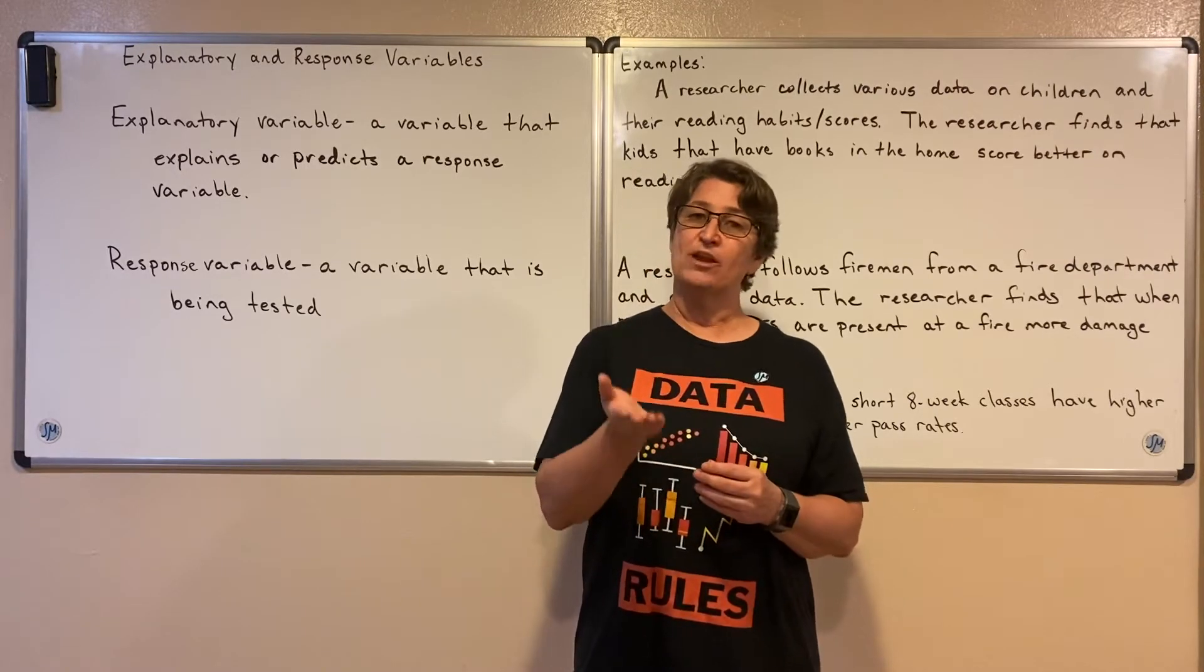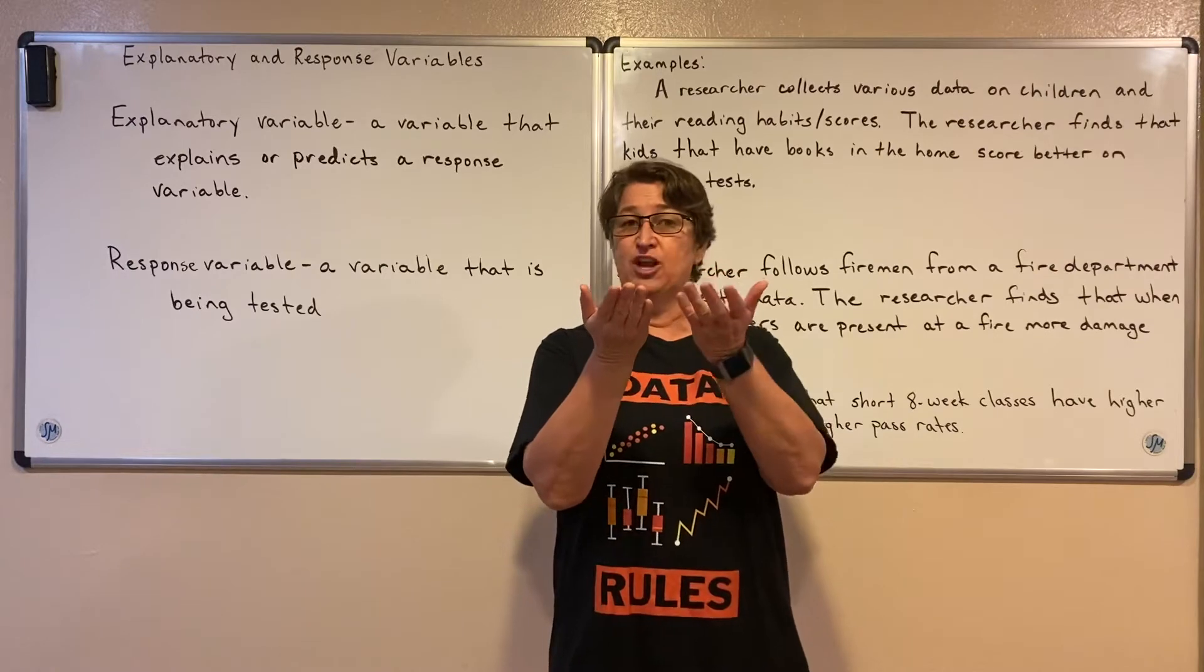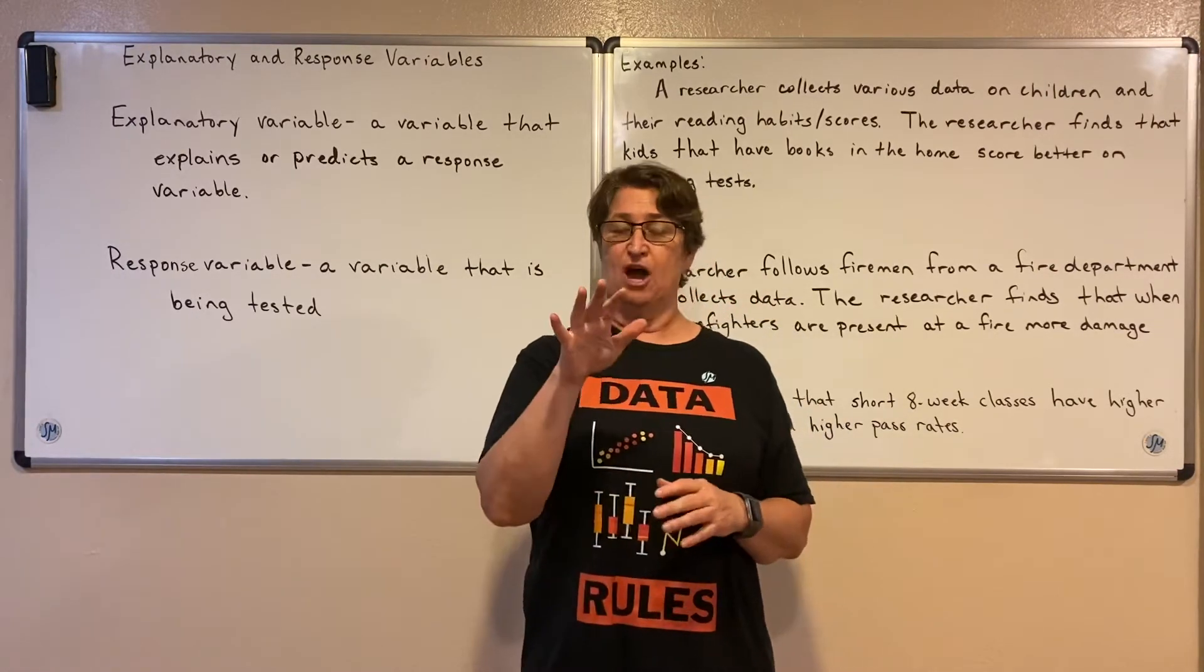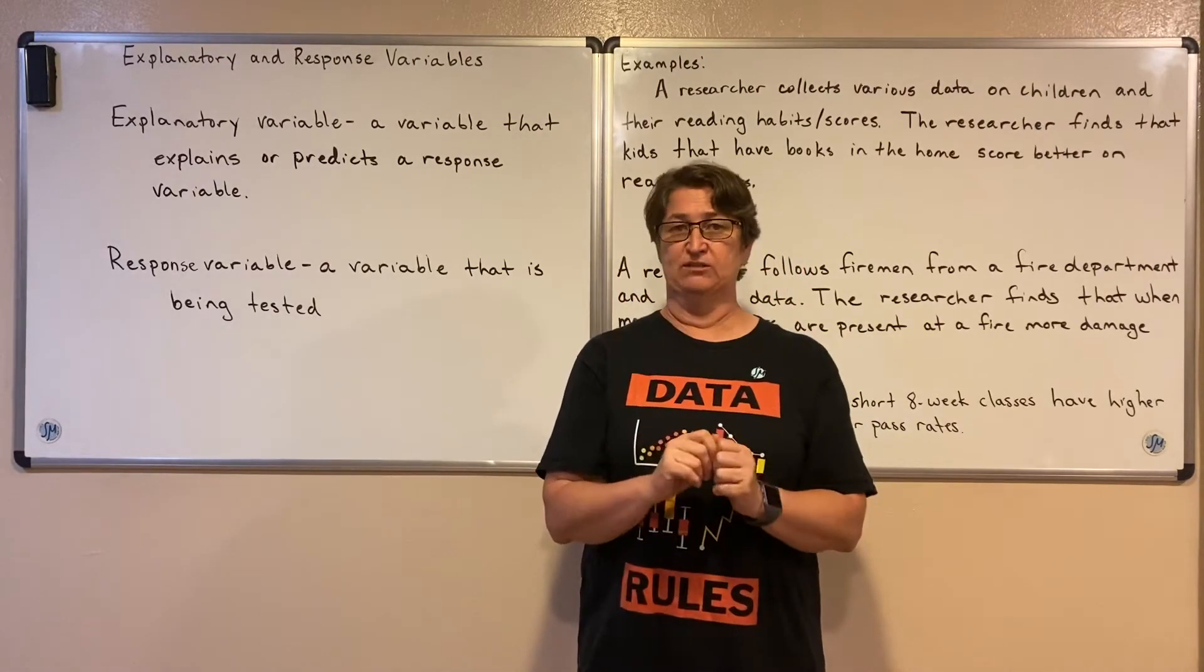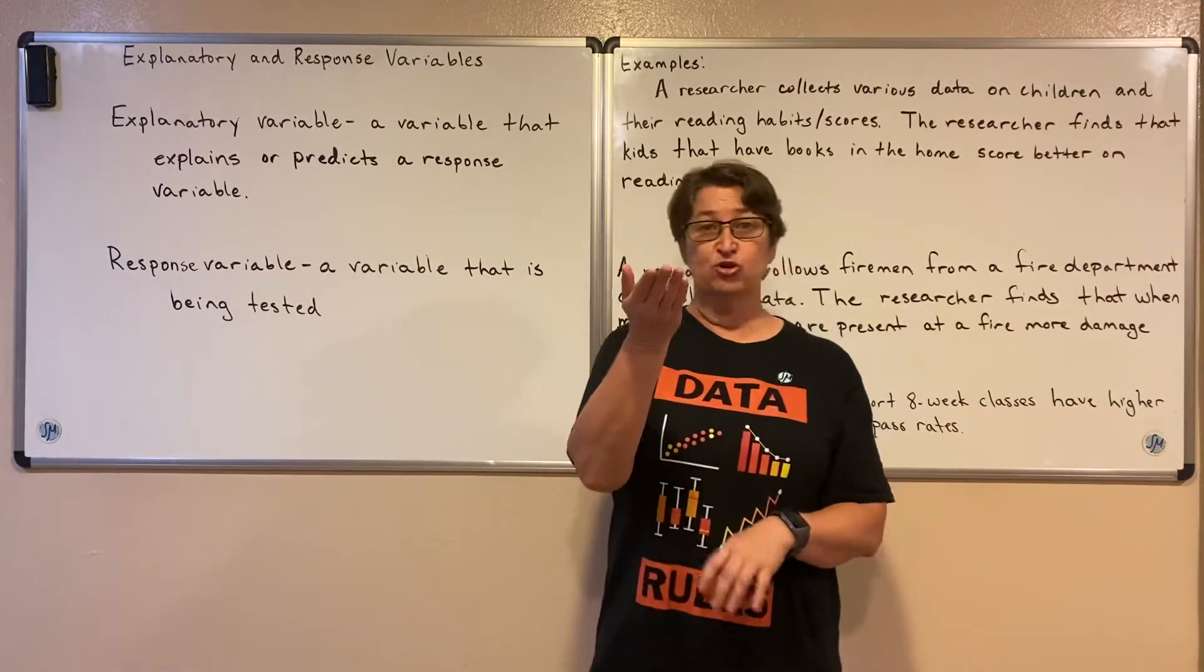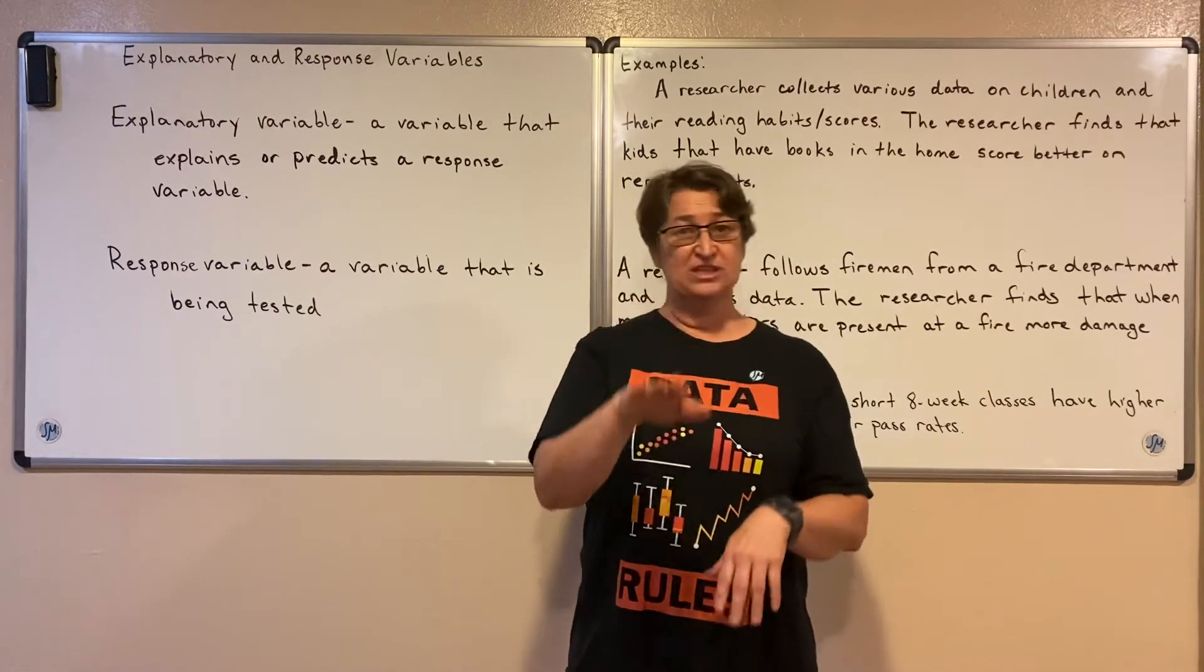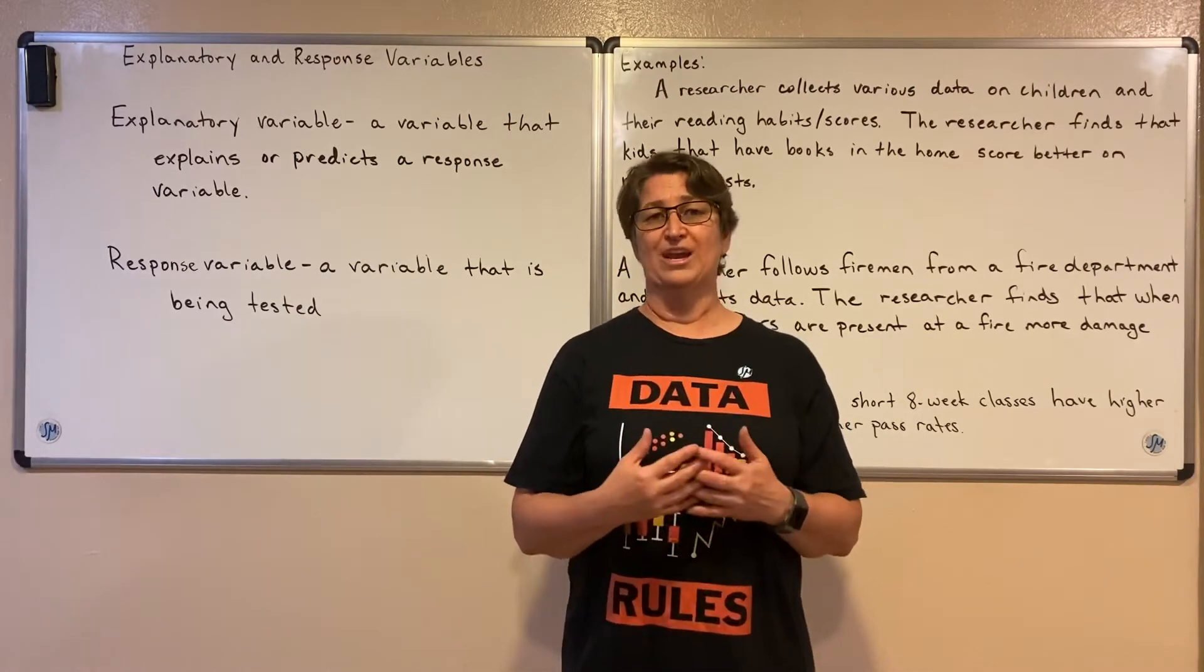Maybe as one of them increases, as measurements increase, the measurements of another one also increase. Or maybe as the measurement of one decreases, the measurement of another decreases. Or maybe as one increases, the other decreases. Or maybe as this one decreases, that one increases. We call that relationship correlation.